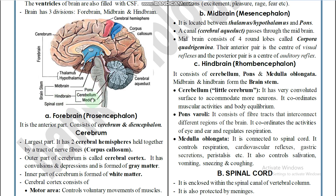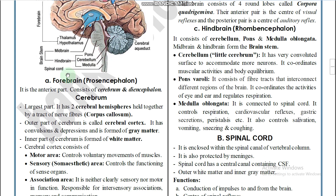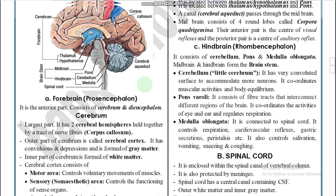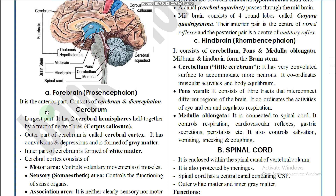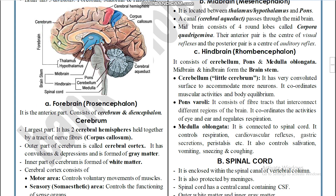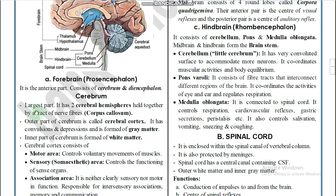The midbrain and hindbrain — pons varoli and medulla oblongata region — together are called the brainstem. The forebrain is also called prosencephalon, the midbrain is called mesencephalon, and the hindbrain is called rhombencephalon. The forebrain is the anterior part and consists of the cerebrum and diencephalon.